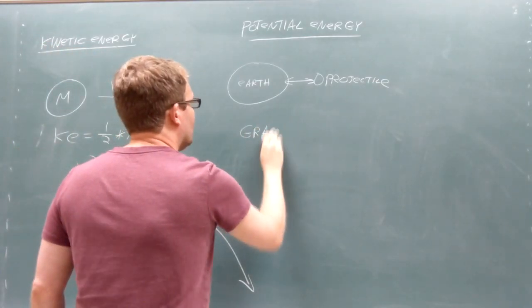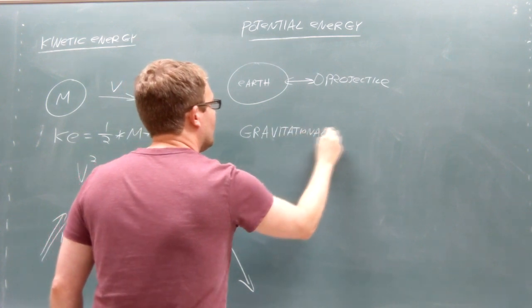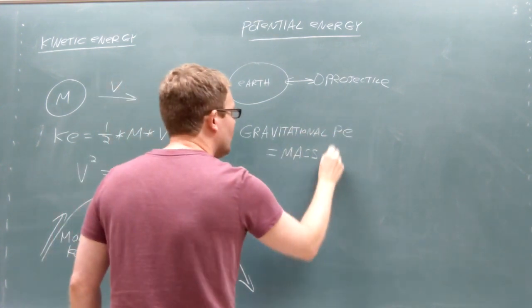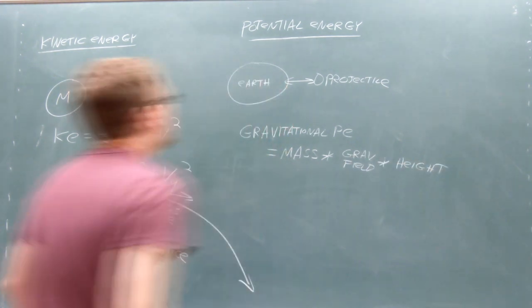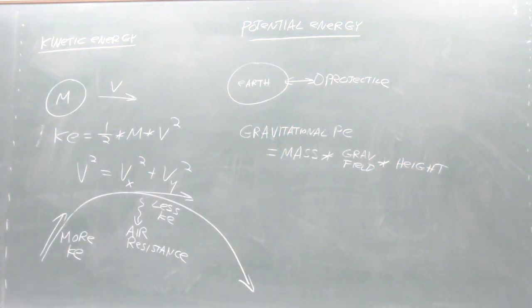Near the surface of the Earth, we can calculate this potential energy with a simple equation given by the projectile's mass times the strength of the Earth's gravitational field times the projectile's height above the surface of the Earth.